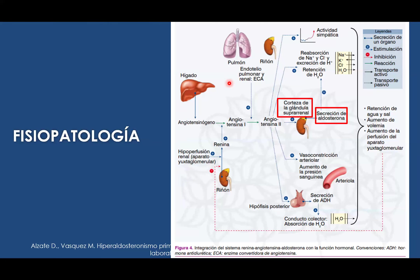Para la fisiopatología, ya conocemos el manejo de la parte hormonal con el angiotensinógeno transformado en angiotensina 1 a través del ECA, que pasa a ser angiotensina 2. Esta va a actuar en la corteza de las suprarrenales para estimular la secreción de aldosterona. La función principal de la aldosterona es la reabsorción de sodio y cloro y la excreción de aniones, reteniendo sodio pero intercambiando con el potasio. La mayoría de pacientes con hiperaldosteronismo van a tener un incremento del sodio pero una disminución del potasio, es decir, un estado de hipocalemia.